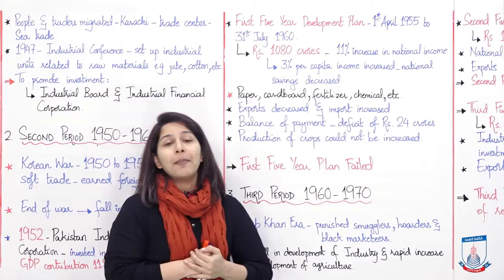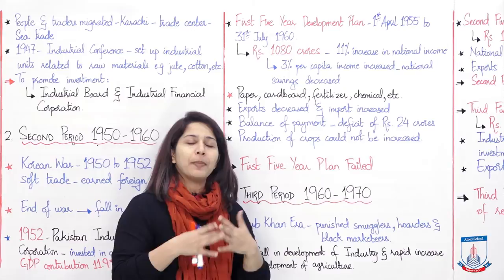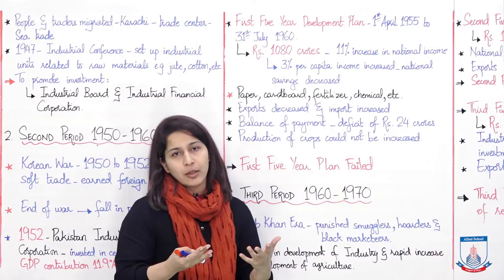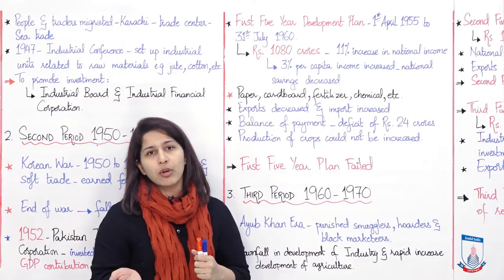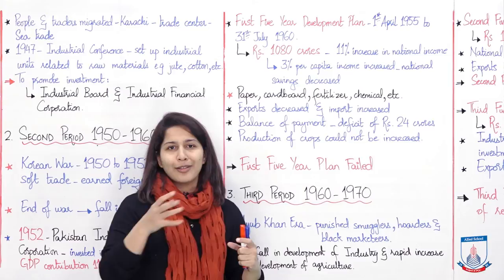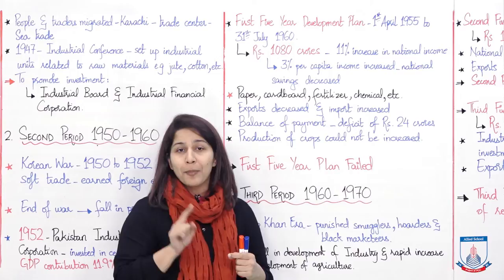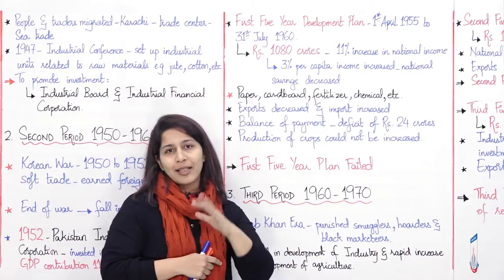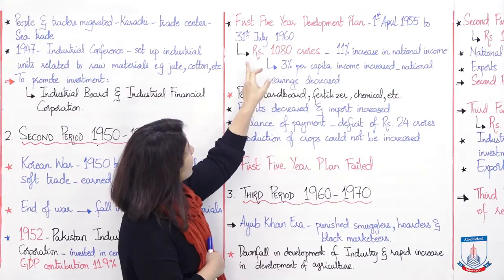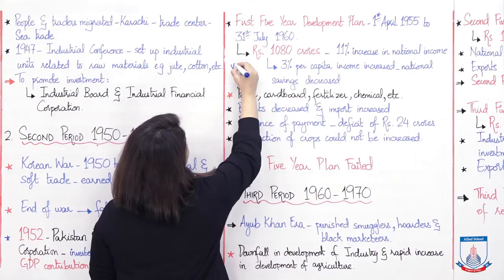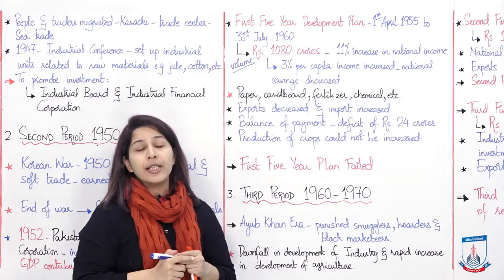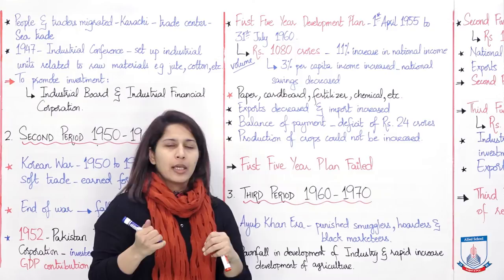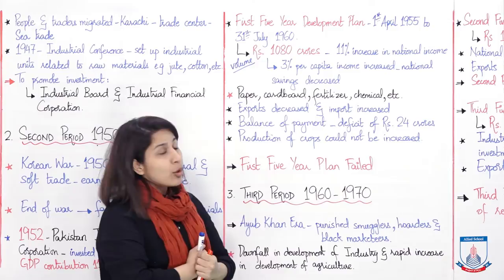Ab baari aayi planning ki — because agar aapne economy develop karni hai toh planning is the most important part. Pakistan ne bhi aisa hi kiya. So the first five-year plan — yeh paanch sala plan tha jo pehla start hua first April 1955 se aur end hua 31st July 1960 ko. Is plan mein jo volume project kiya gaya, that was rupees 1080 crores — yeh plan predict kiya gaya ki yeh Pakistan economy is going to earn in five years.